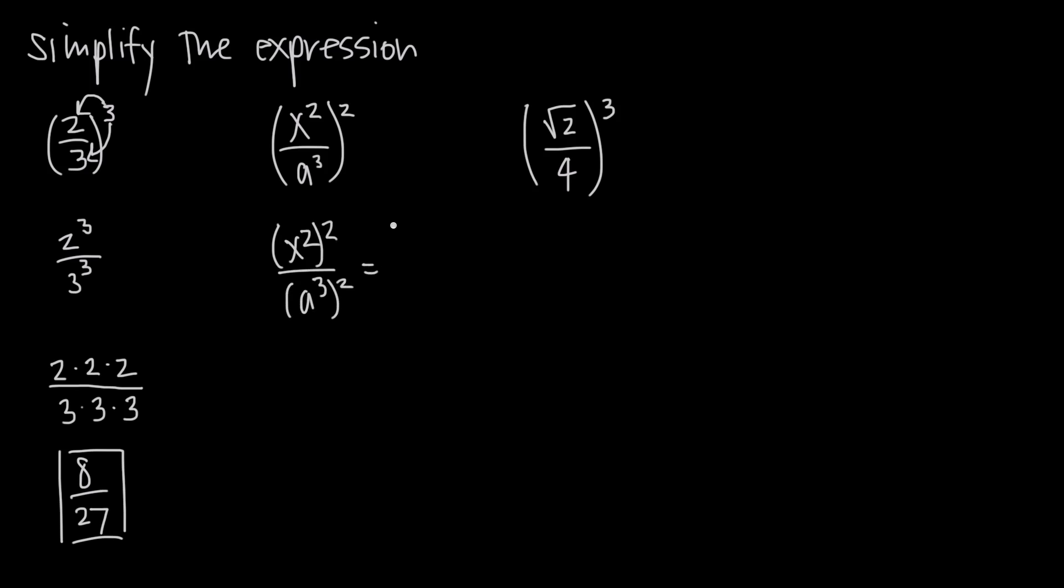That's of course going to give us x² times x² and in the denominator a³ times a³. And remember when we multiply like bases we just add the exponent. So x² times x² gives us x to the 2 plus 2 or x to the 4, and a³ times a³ gives us a to the 3 plus 3 or a to the 6th.